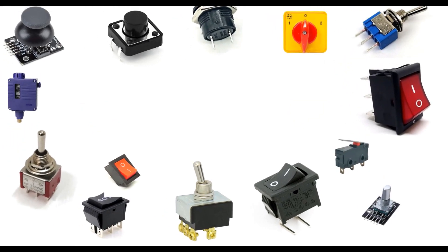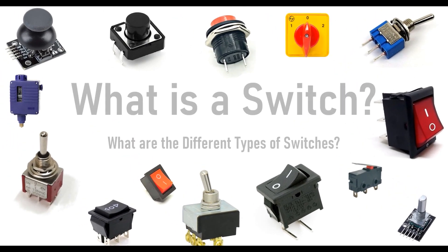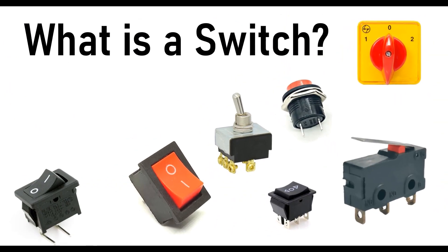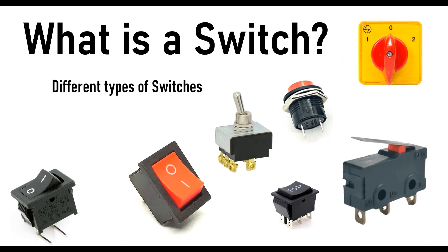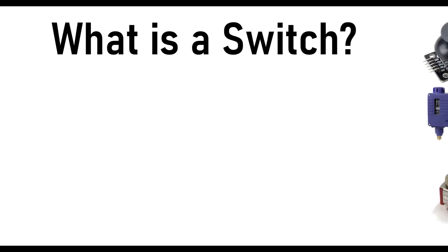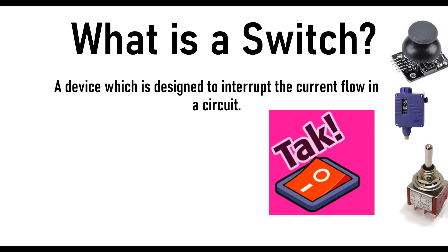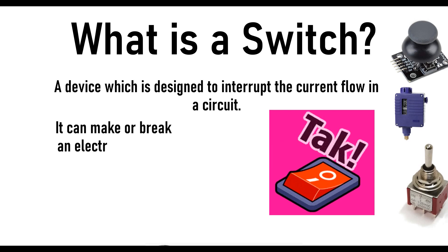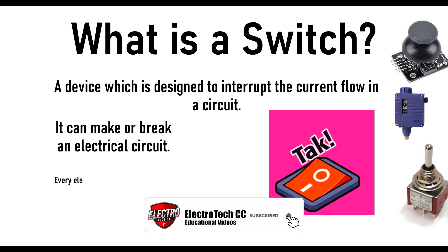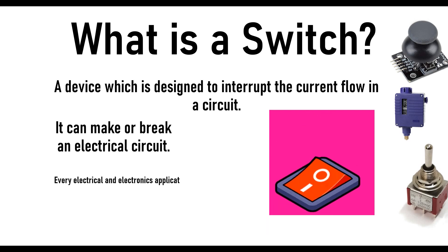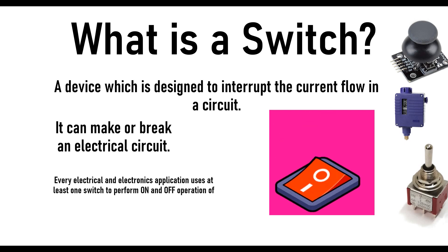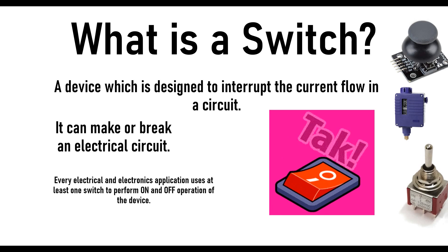Hello friends, welcome back to the YouTube channel Electrotech CC. In this video we are going to discuss about switches. The first question is: what is a switch and what are the different types of switches? A switch is a device which is designed to interrupt the flow of current in the circuit. In simple words, a switch can make or break an electrical circuit. Every electronics and electrical application uses at least one switch to perform on and off operation of the device. Switches are a part of control system and without it control operation cannot be achieved.